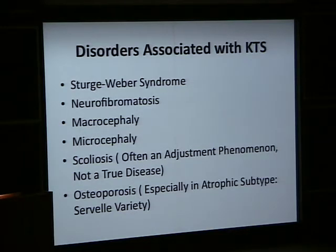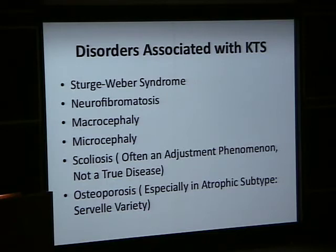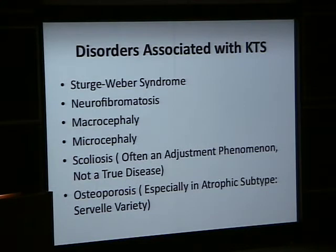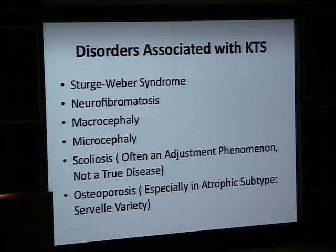Another element is osteoporosis. In most patients with KTS there is no osteoporosis. However, in the atrophic variety — where the limb affected by KTS is not enlarged but actually very small and atrophic — those patients are prone to fracture and osteoporosis.